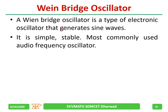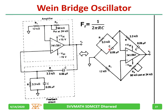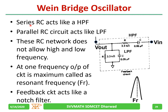The Wien bridge oscillator is a type of electronic oscillator that generates sine waves. It is very simple, stable, and the most commonly used audio frequency oscillator. The series RC acts as a high pass filter, and the parallel RC acts as a low pass filter. This RC network does not pass very high or very low frequencies. At some frequency the output is maximum — that is the resonant frequency.